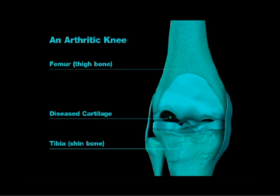This is a schematic of an arthritic knee, and you can see here — represented by this red material — that the cartilage has worn out. Once the cartilage wears out on both sides of the joint, you get the bone on bone, and you get the pain and the difficulty with walking. You can also get a deformity — you can be knock-kneed or bow-legged as a result of the cartilage wearing out, whether it's on the inner or outer side of the knee.